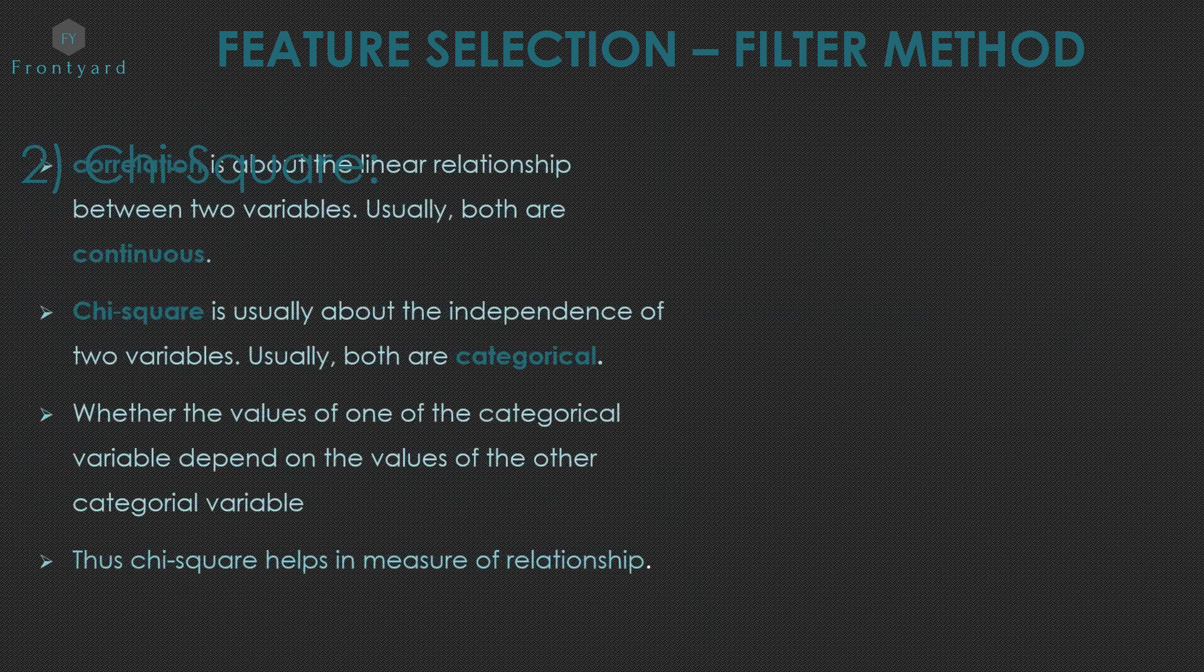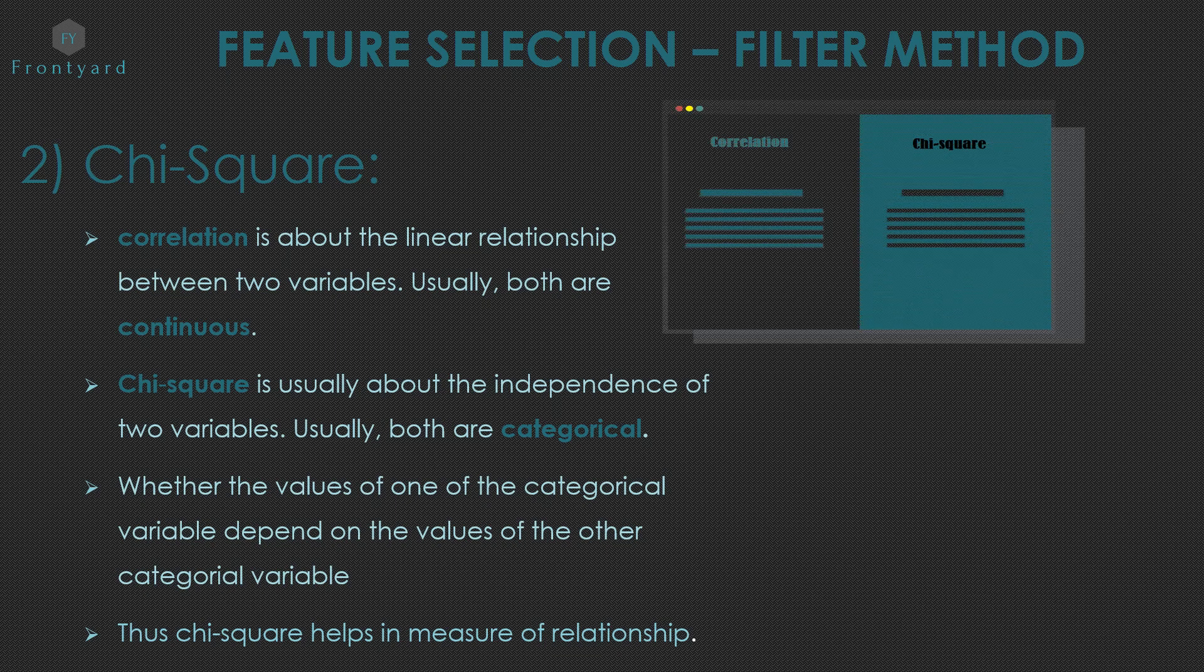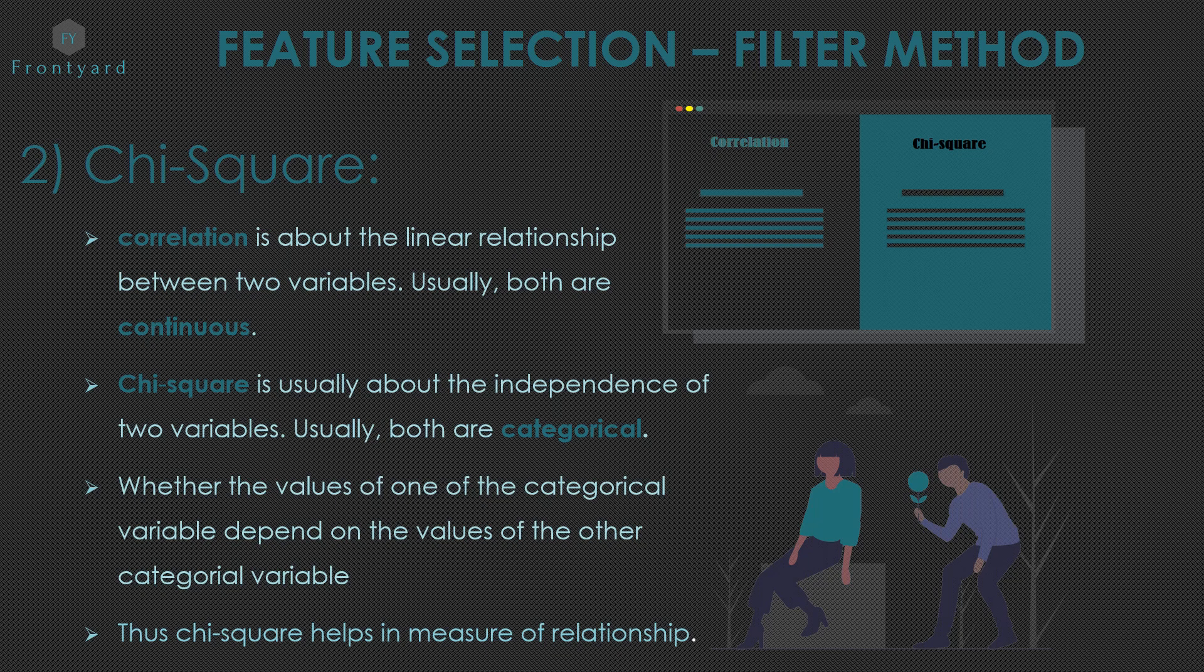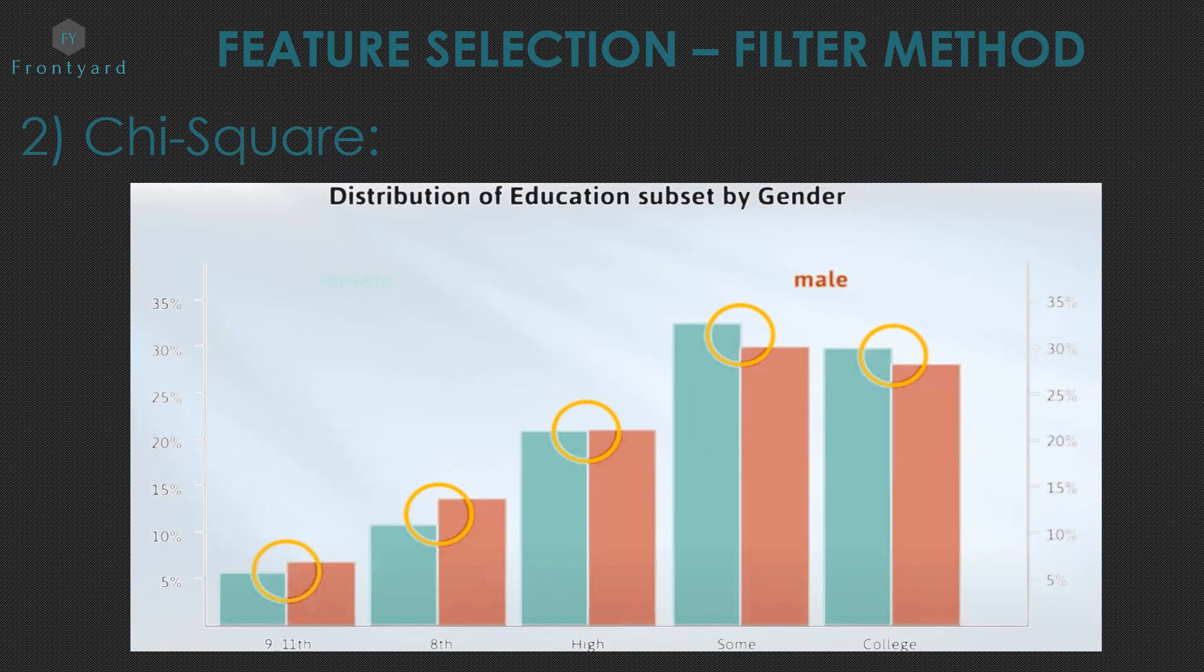Next is chi-square. Correlation is about the linear relationship between two variables. Usually, both are continuous. But chi-square is usually about the independence of two variables. Usually, both are categorical. Whether the value of one of the categorical variables depends on the values of the other categorical variable. This is chi-square. Thus, chi-square helps in measure of relationship. Let's see an example for chi-square. This is the representation of male and female over the grades like 9th, 8th, high, and college.